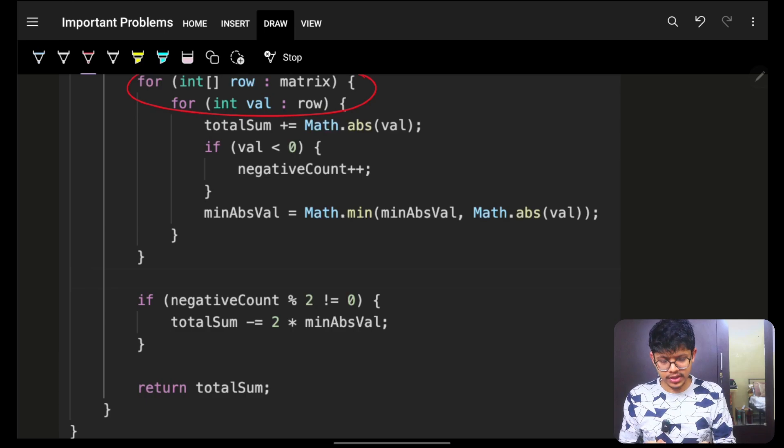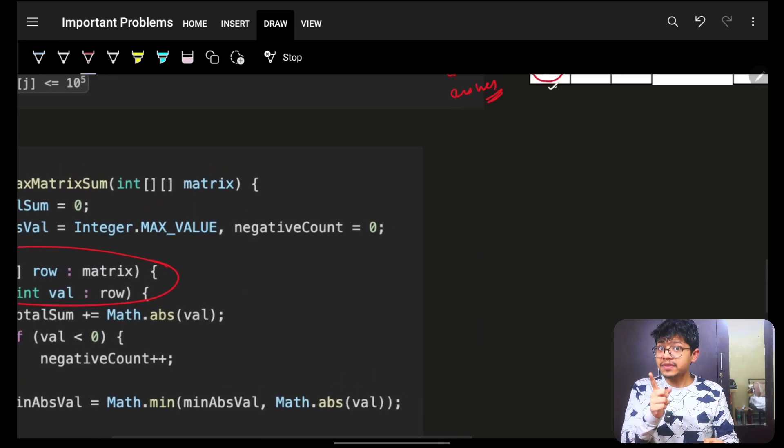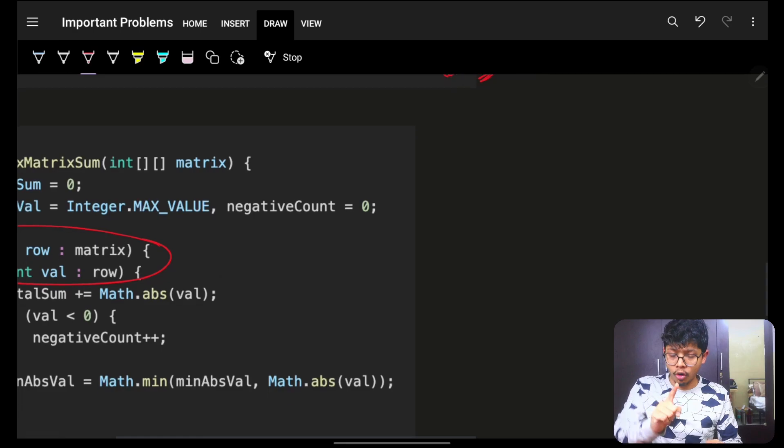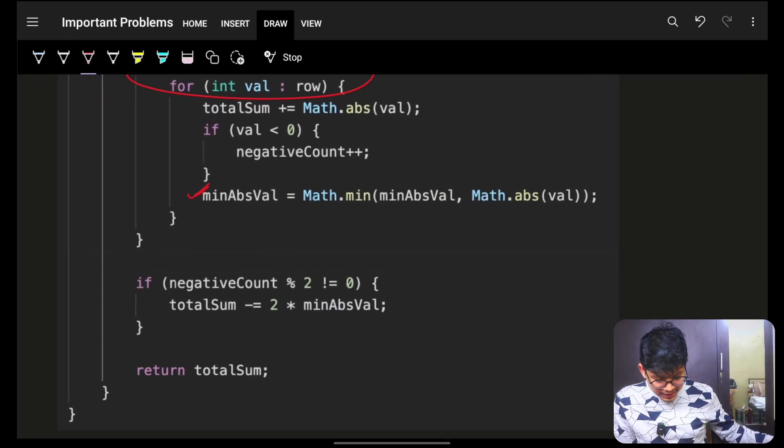You will get the negative count, how many negative count you have, and also you are grabbing the minimum absolute value because this will help you if the count is odd. In that case,